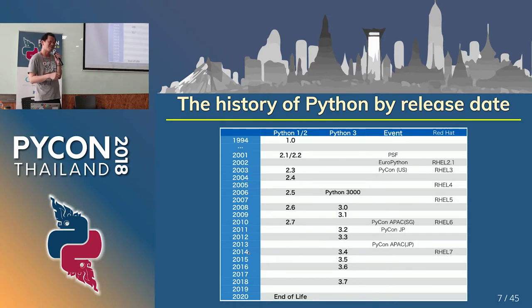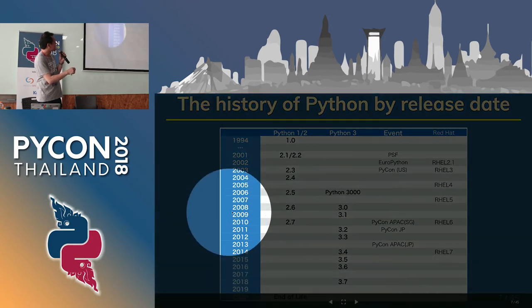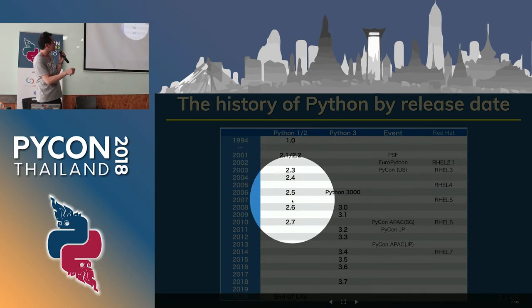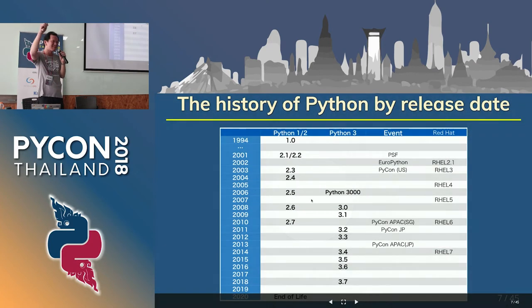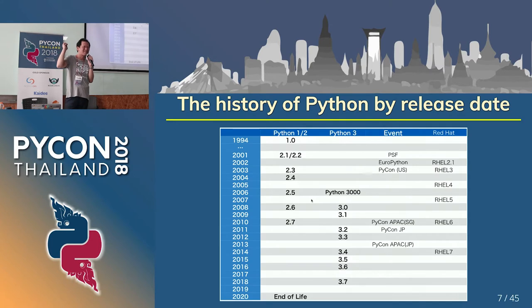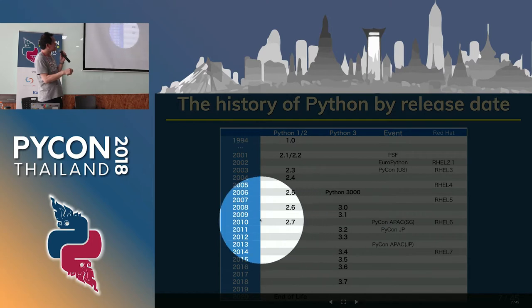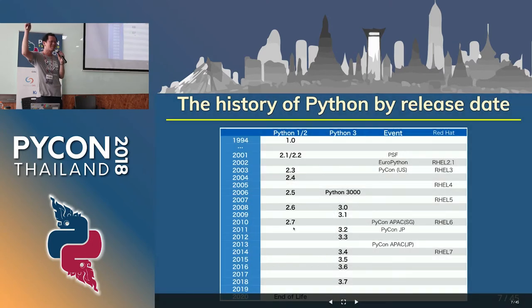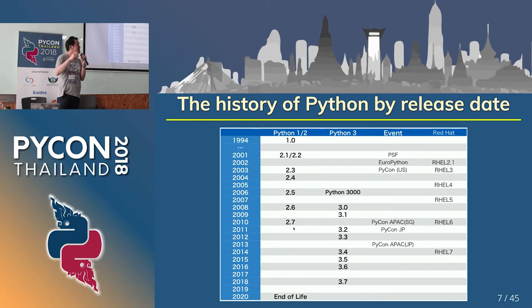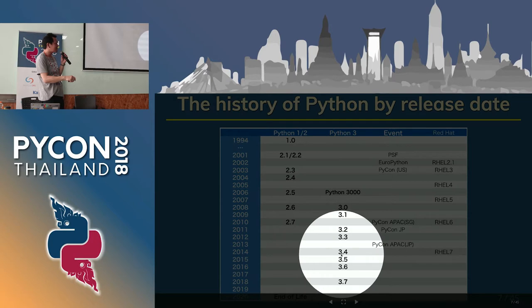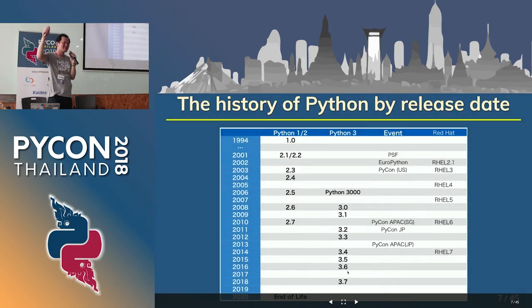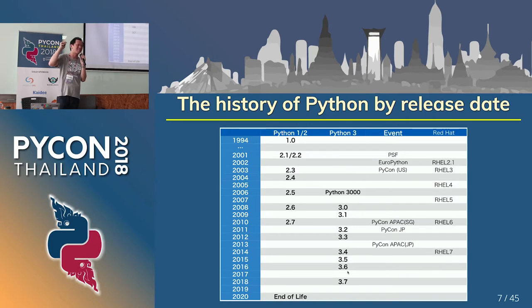When did you start Python — 2.3 or 2.6? Did you start with Python 2.7? About half. Python 3.4 or Python 3.6? Some people started there. Thank you very much.